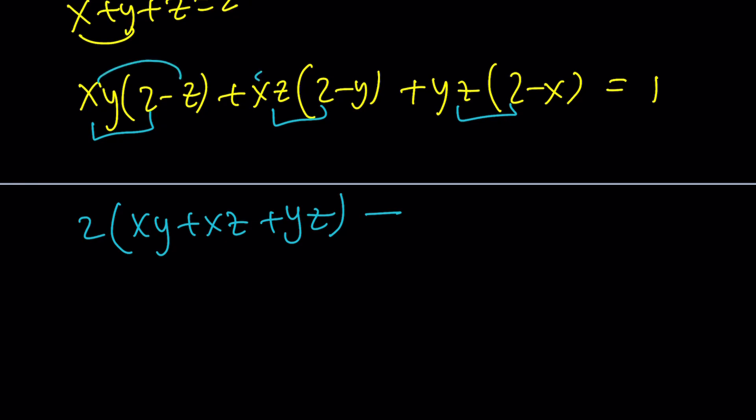Minus xyz - xyz - xyz is going to give you -3xyz. Does that look familiar? You've seen that before.